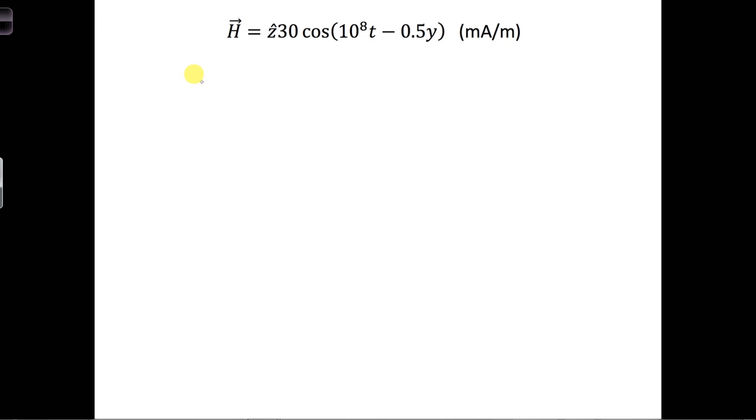In Part D, we want to know the wavelength of the material. So that's 2 pi over k, or beta, but since it's lossless, we'll use k. And we solved for k already, so that's 0.5, and we get 12.6 meters.